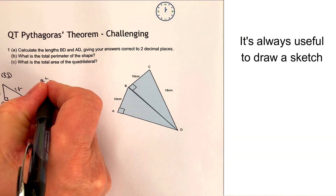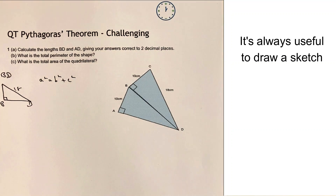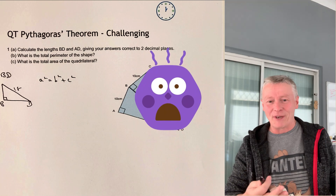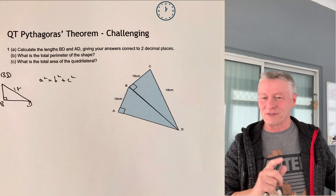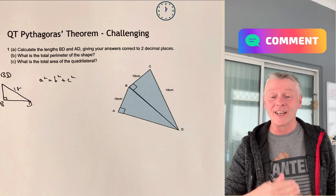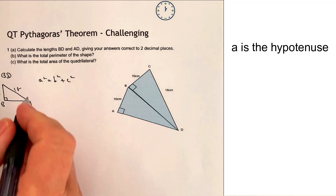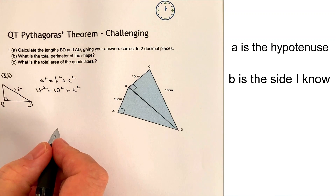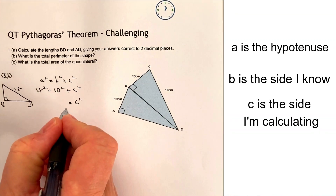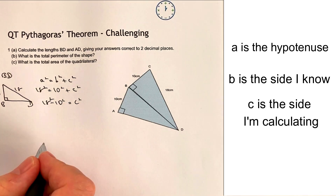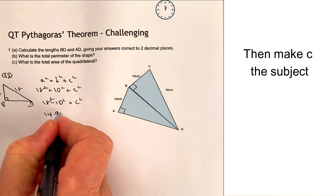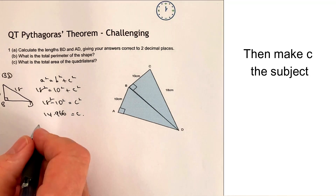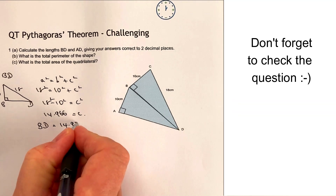I'm going to use A squared equals B squared plus C squared. I'm aware some people write it as C squared equals A squared plus B squared, but the way I always do it is A squared plus B squared equals C squared, and I'm going to stick to that. So A squared is always the hypotenuse, which is 18 squared. B squared is the side I've got, which is 10 squared, and C squared is what I'm looking for. I need to make C squared the subject, so I'm going to take 10 squared away from 18 squared, and I get 14.966, which equals C. Correct to two decimal places, BD is equal to 14.97 centimetres.